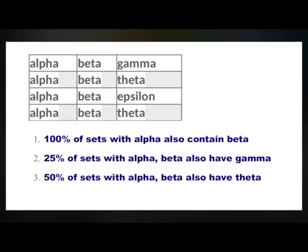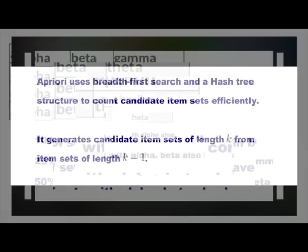The next item has alpha, beta, theta; the third one has alpha, beta, epsilon; and the last one has alpha, beta, and theta. So here, 100% of sets with alpha also contain beta. 25% of sets with alpha and beta also have gamma. 50% of sets with alpha and beta also have theta.